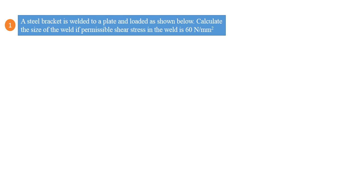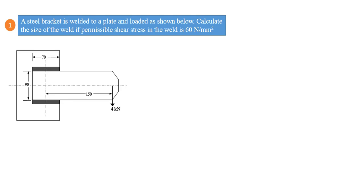Let us start with problems of welded joints. A steel bracket is welded to a plate as shown and loaded as shown below. Calculate the size of the weld if permissible shear stress in the weld is 60 MPa.